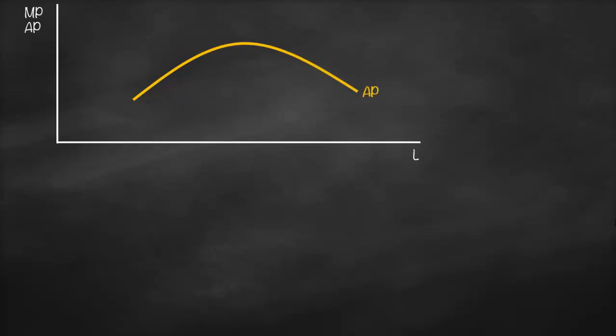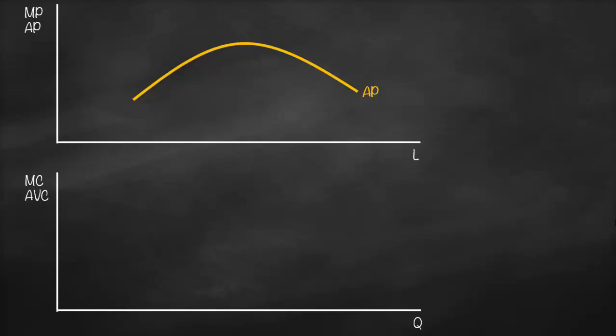This video is about the relationship between average product and average variable cost, and marginal product and marginal cost. The x-axis represents labor, and the y-axis shows marginal product and average product. The average product is an inverse U-shape. On the second graph, the x-axis is quantity, and the y-axis shows marginal cost and average variable cost, where average variable cost is U-shaped.